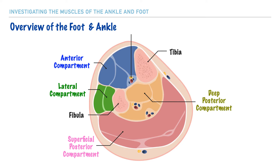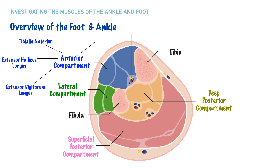The next thing that we'll do is identify the muscles that belong to each compartment. Within our anterior compartment, we have the tibialis anterior, extensor hallucis longus, the extensor digitorum longus, and the peroneus tertius. Next, within the lateral compartment, we have the peroneus longus and the peroneus brevis.